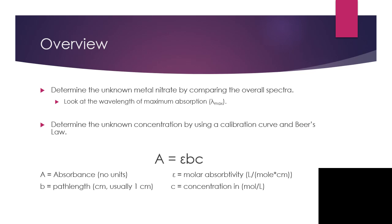And this is what we call lambda max. By comparing where that lambda max is to your unknown, that will help you determine which of the metal, the known metal nitrates, your unknown is.